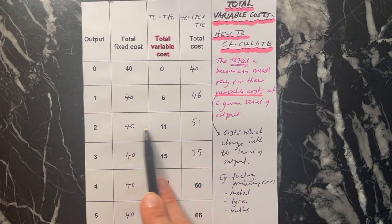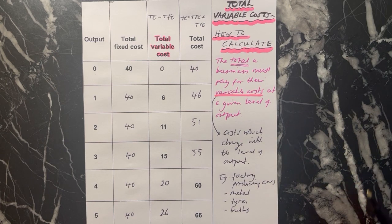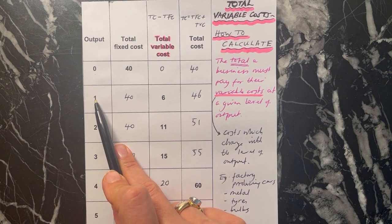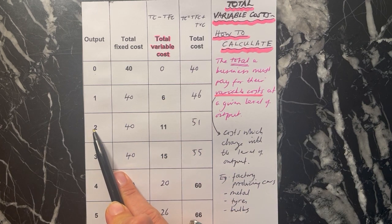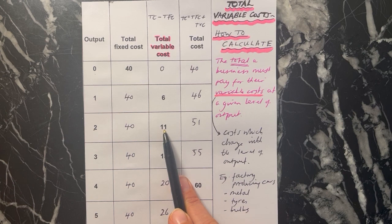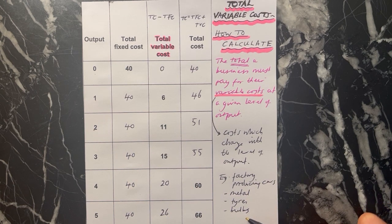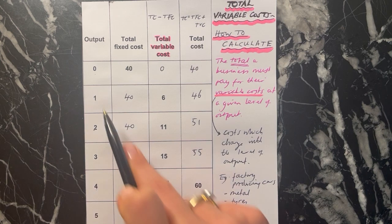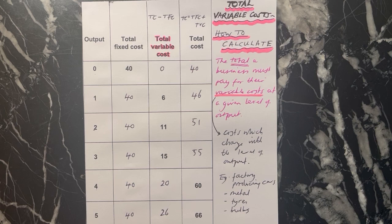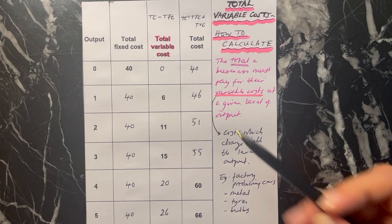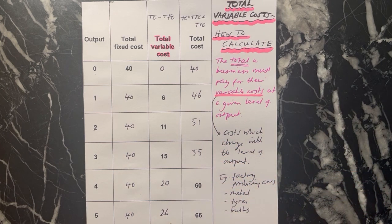Now you can see that for any level of output, the business can work out how much they'll have to pay in variable costs. If they produce one car, their variable costs will be six. If they make two cars altogether, they'll be paying 11 in variable costs. If they make four cars altogether, they'll be paying 20 for their variable costs. This enables a business to work out how much they'll be spending on variable costs depending on their level of output. Because every time you make an extra car you have to spend more on variable costs, as output goes up, the value for your total variable cost goes up.